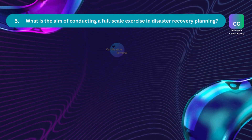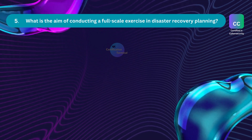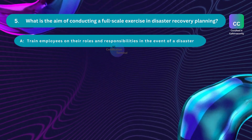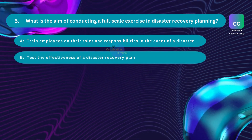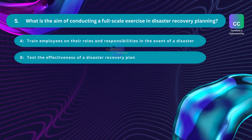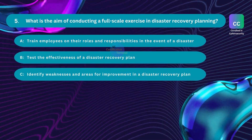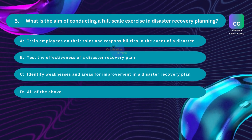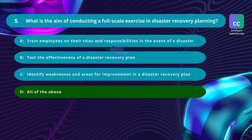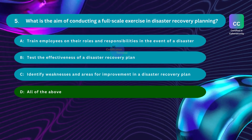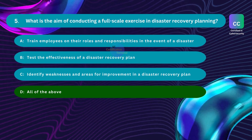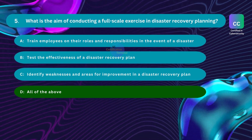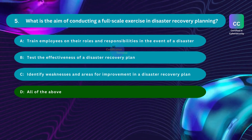Question number 5. What is the aim of conducting a full-scale exercise in disaster recovery planning? Option A: train employees on their roles and responsibilities in the event of a disaster. Option B: test the effectiveness of a disaster recovery plan. Option C: identify weaknesses and areas for improvement in a disaster recovery plan. Option D: all of the above. The correct answer is Option D, all of the above. A full-scale exercise is a simulation designed to test the effectiveness of the plan, train employees on their roles, and identify weaknesses and areas for improvement.